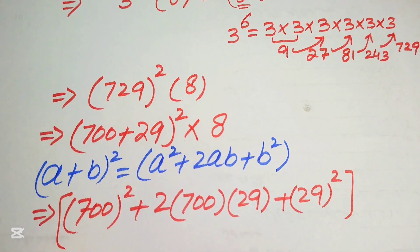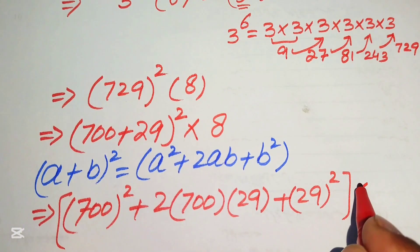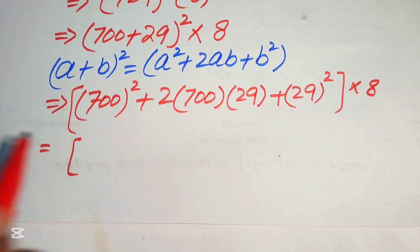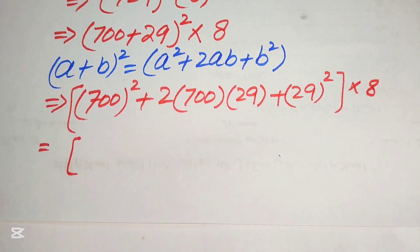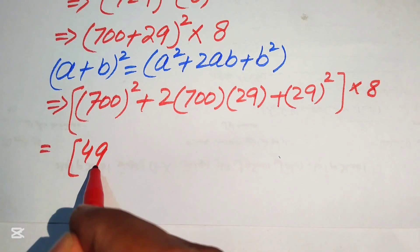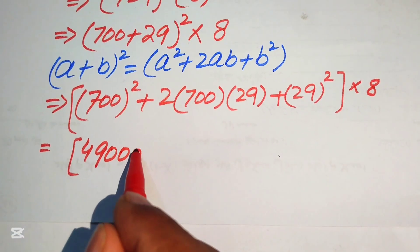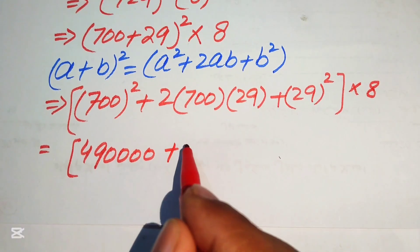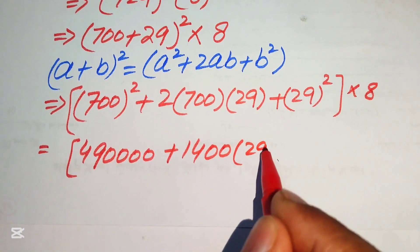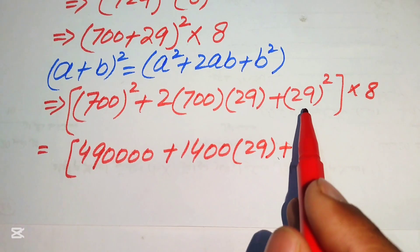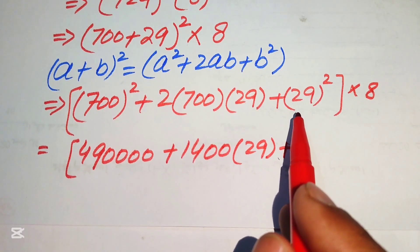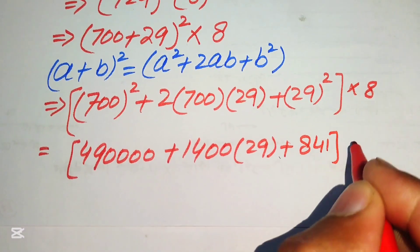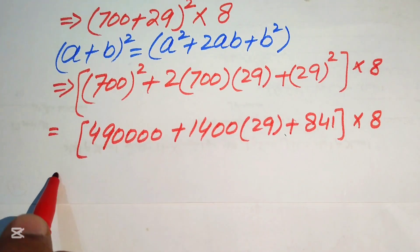Computing each term: 700^2 is 490000. Two times 700 is 1400, and 1400 times 29 gives 40600. And 29 squared equals 841. So we have (490000 + 40600 + 841) times 8.